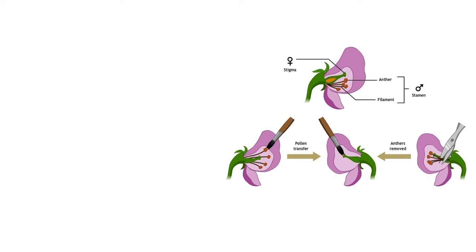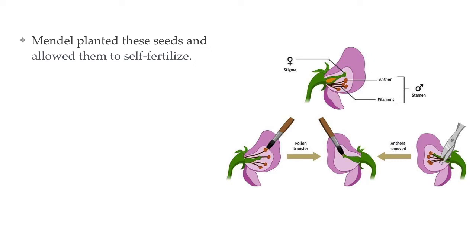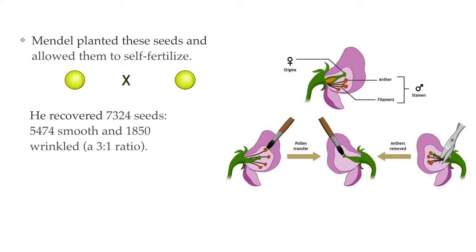He then took the seeds from that first generation, planted them, let them grow flowers, and self-fertilized those flowers — essentially allowing the plants to undergo sexual reproduction only with themselves. He took the smooth seeds he got from that generation and crossed them with other smooth seeds. When he was done with that second experiment, he found in the next generation he recovered 7,324 seeds. Out of those 7,324, 5,474 were smooth and 1,850 were wrinkled — about a 3 to 1 ratio of smooth to wrinkled.